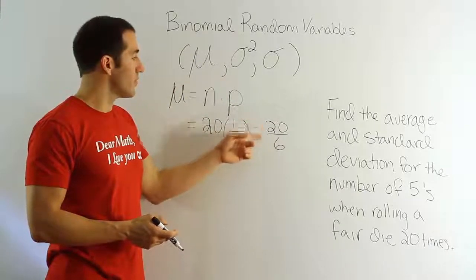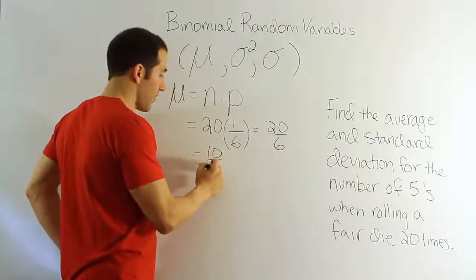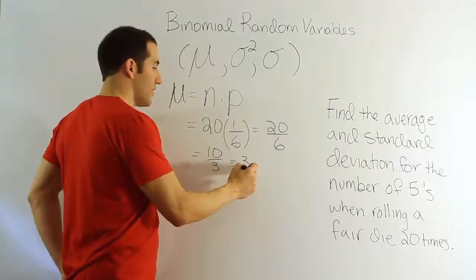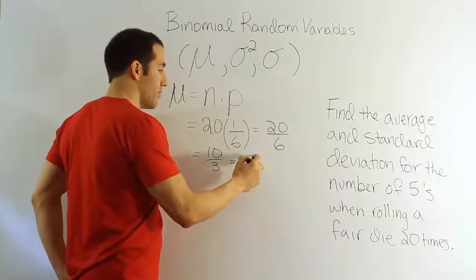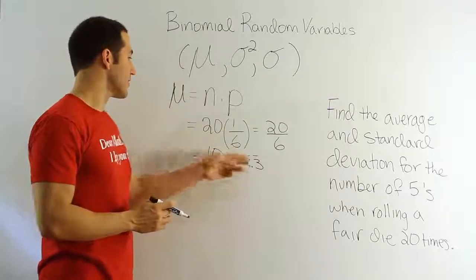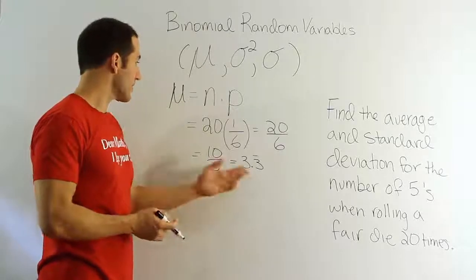So if I put 2 into both of these, I get 10 on top and 3 on the bottom. And you know that 3 will go in there evenly 3 times, leaving you 1 third or 3.3 repeating as our mean. So our mean is 3.3 repeating, 3 and 1 third. That's our answer for the mean.